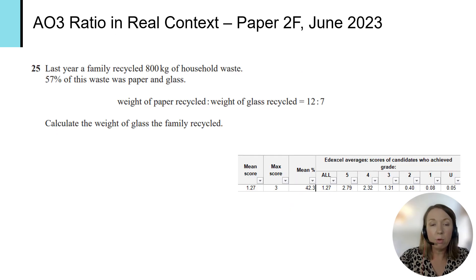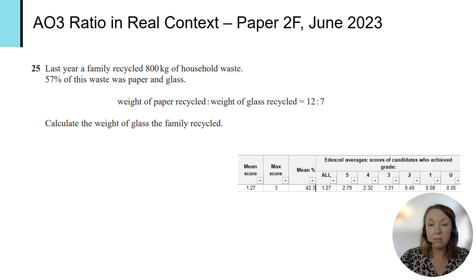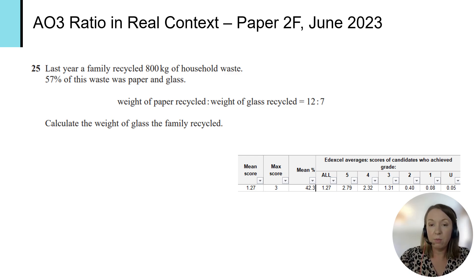One example here of what we mean by an AO3 ratio question — this one's from June 2023. We can see in the performance data that students who went on to achieve a grade three scored an average of 1.31 marks out of a maximum possible three marks, whereas grade four students scored on average 2.32 marks out of three — so a clear discriminator of performance at that grade four level.